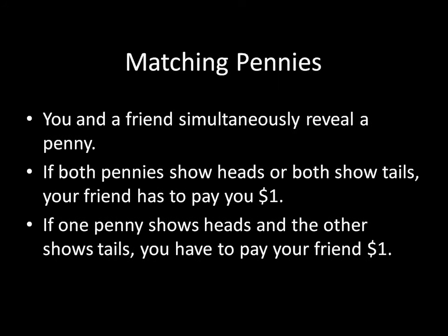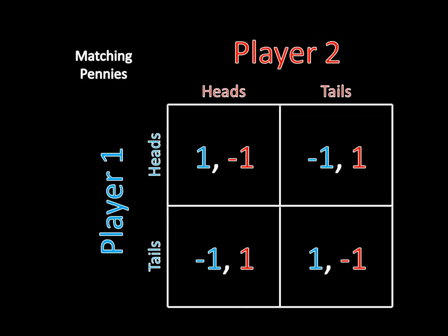The payoff matrix looks like this: if you are matching — so if you get heads and heads — then you win $1, your friend loses $1. And that's the same thing if they're both tails. Meanwhile, if they mismatch — if one is heads and the other is tails — then you lose $1, she gains $1. And if you're showing heads and she's showing tails, same story.